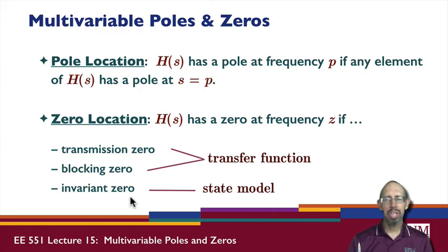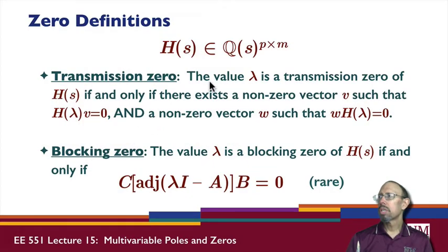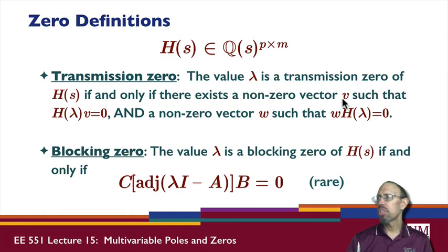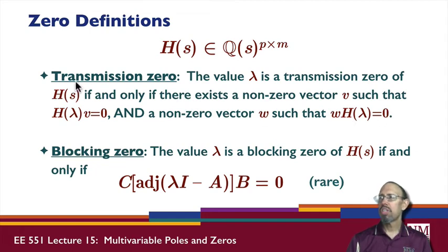What are all these zeros about? A transmission zero: lambda is a transmission zero of the transfer function if and only if there exists a non-zero vector v such that H evaluated at lambda times v equals zero, and there exists a non-zero vector w such that w times H evaluated at lambda also equals zero. That is the definition of a transmission zero, which is based on the transfer function.